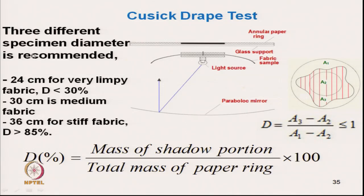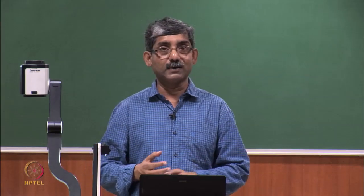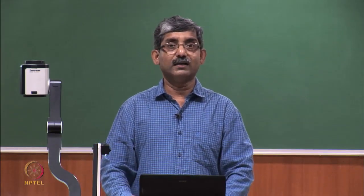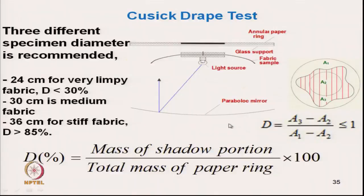Three different specimen diameters are recommended depending on fabric type: 24 cm for very limp fabric (drape coefficient less than 30%), 30 cm for medium fabric, and 36 cm for stiffer fabric.